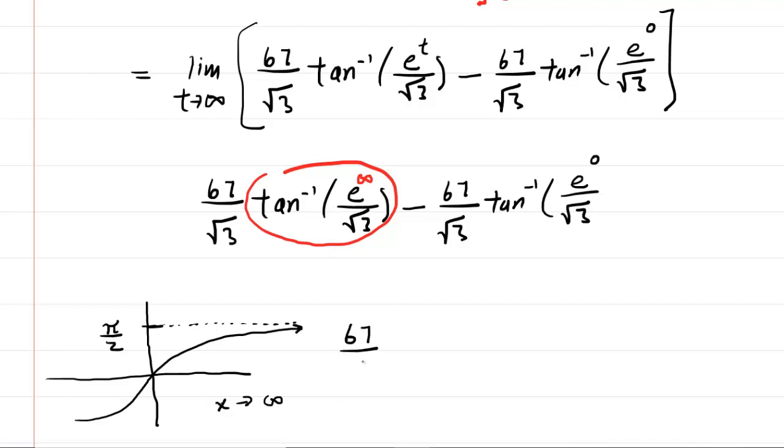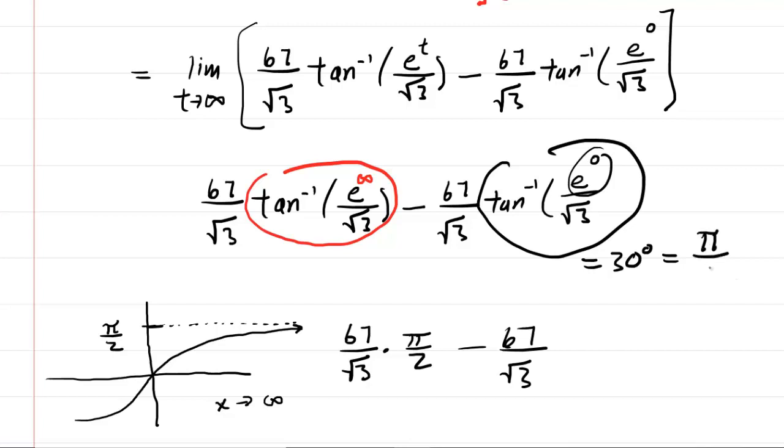We'll have 67 over radical 3 multiplied by π over 2, minus 67 over radical 3. Now e to the 0 is just 1, so what we really need is the inverse tangent of 1 over the square root of 3. Most of us know that is 30 degrees. We want that in radians in calculus, though, so we're going to do π over 6.